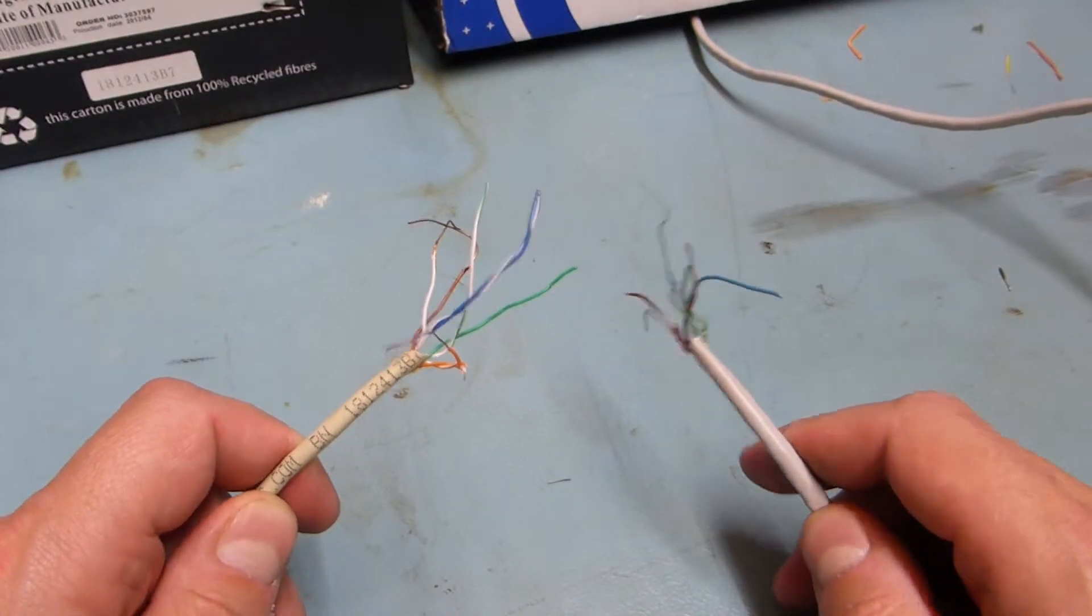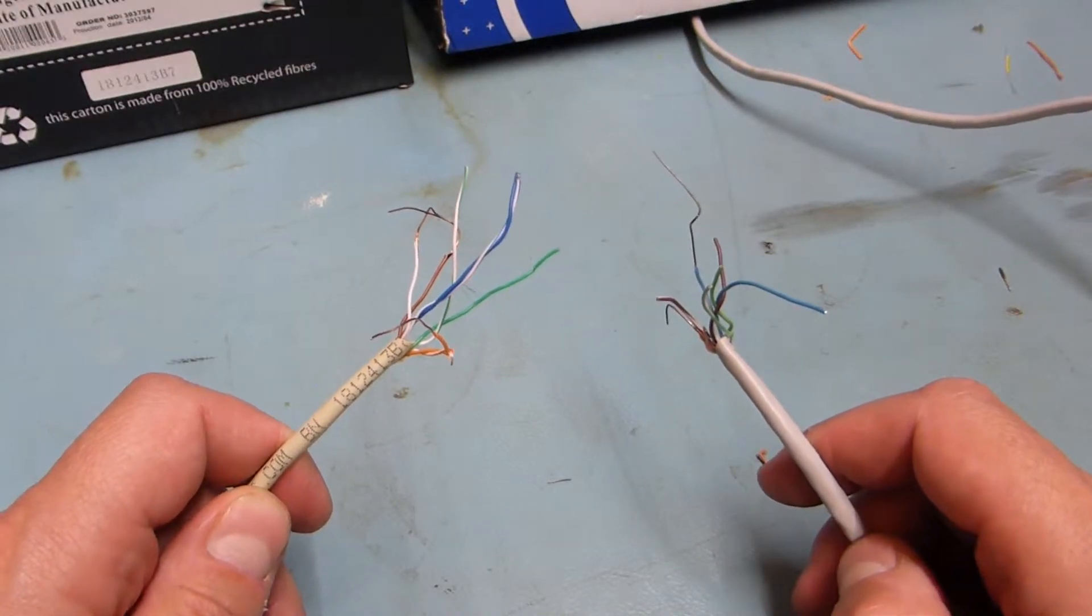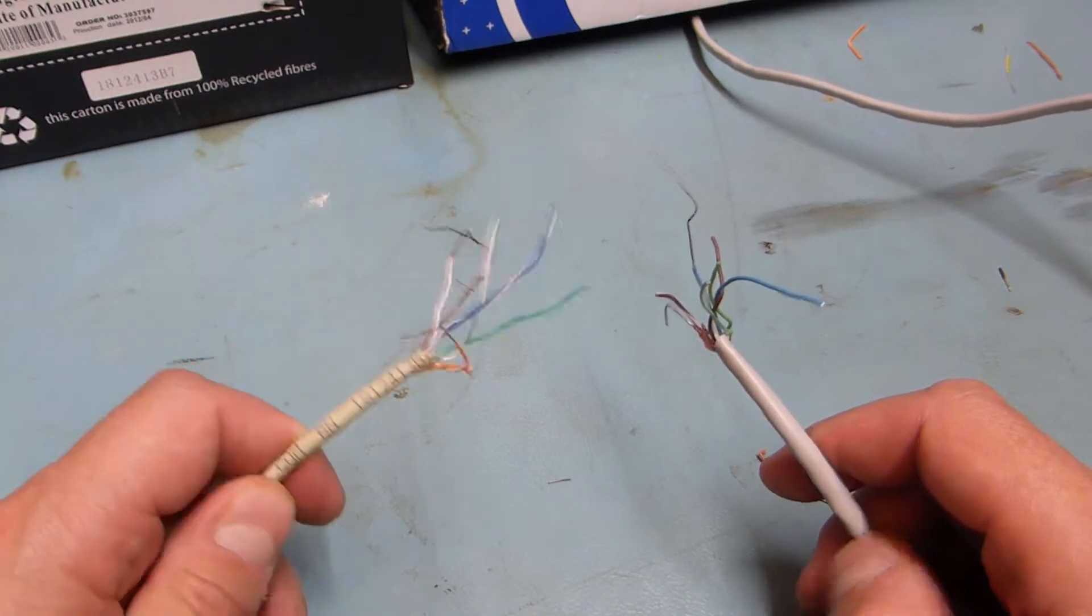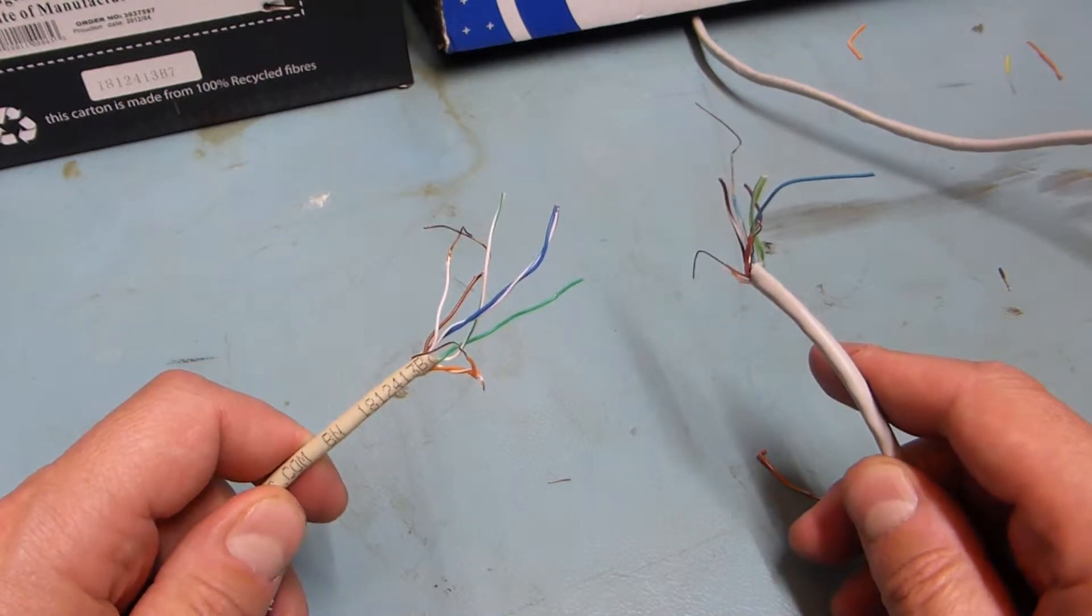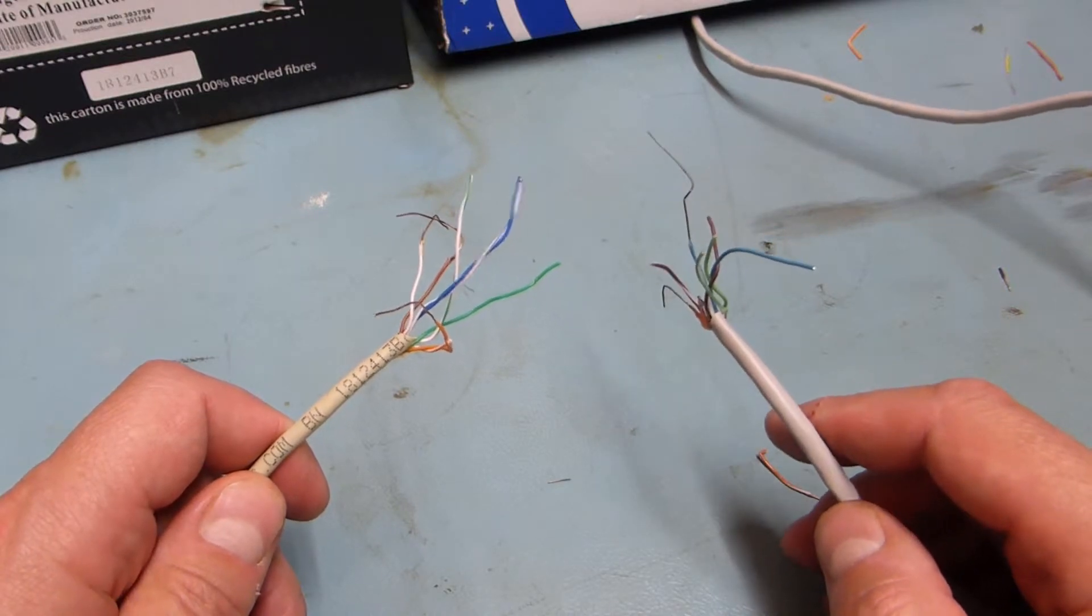In this video I'm going to show you how to identify the difference between pure copper Cat5 and copper-coated aluminum Cat5, and why you should avoid it on your network.